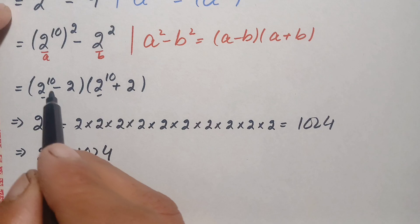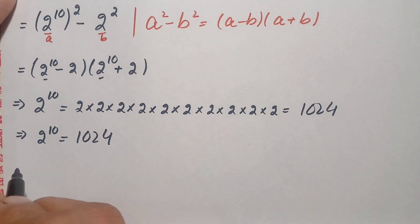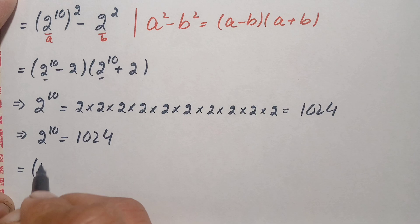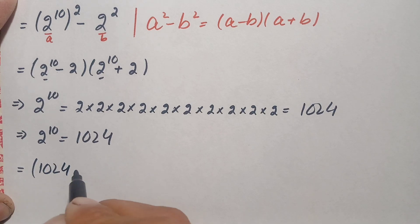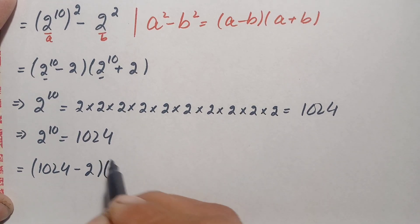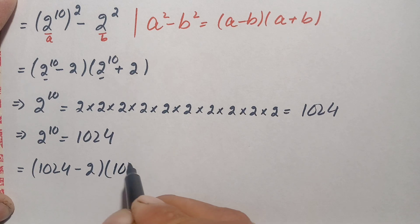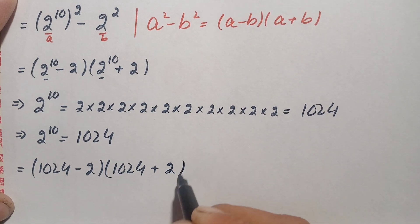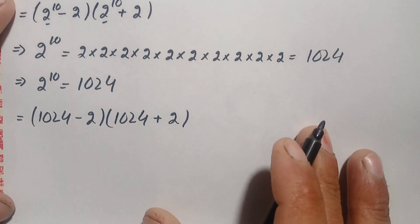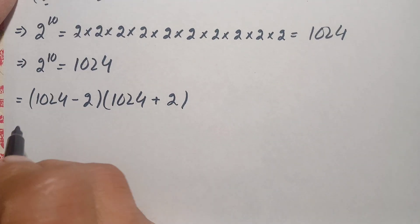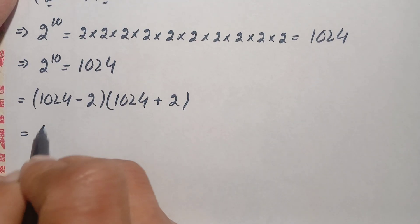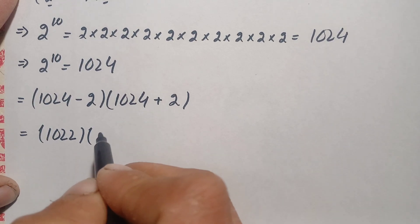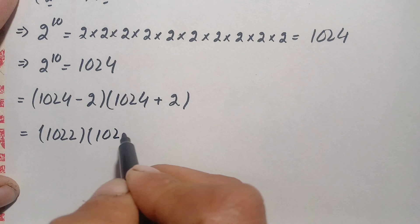Now we will replace 2 raised to power 10 with 1024. So this becomes 1024 minus 2, times 1024 plus 2. Performing the subtraction and addition gives us 1022 times 1026.